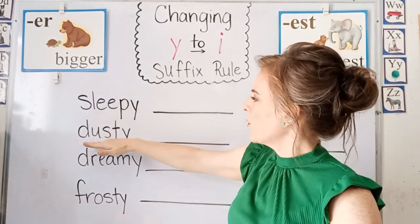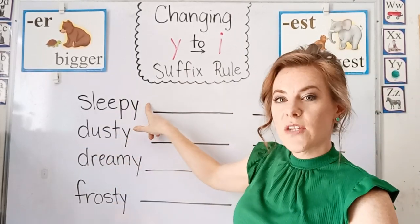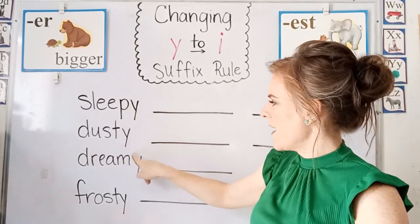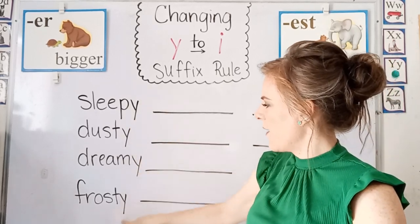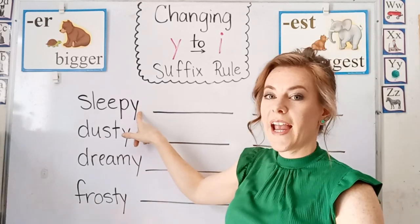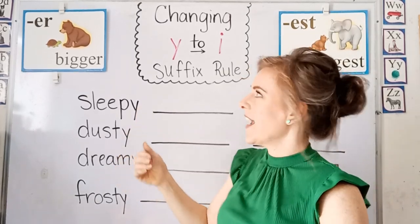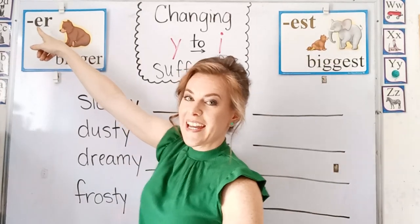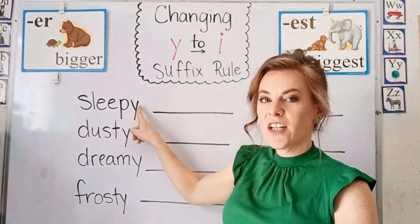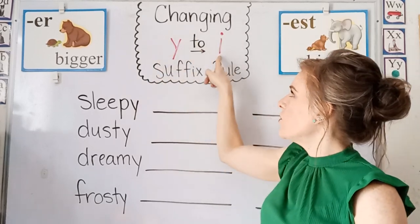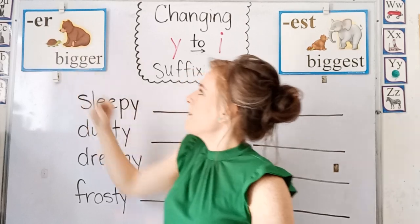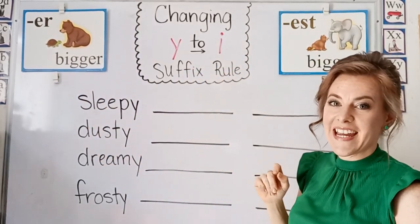Here we have our root words and all of these root words end with a Y. If you have a root word that ends with a Y and you're adding a suffix that begins with an E, then you change the Y to an I before adding that suffix that begins with an E.